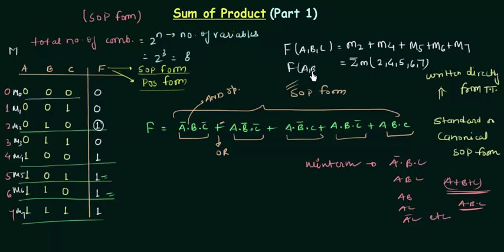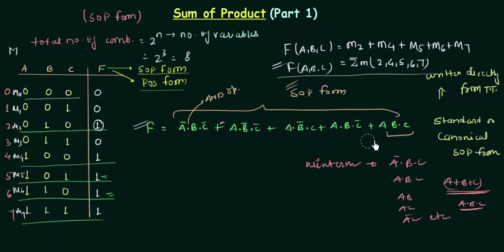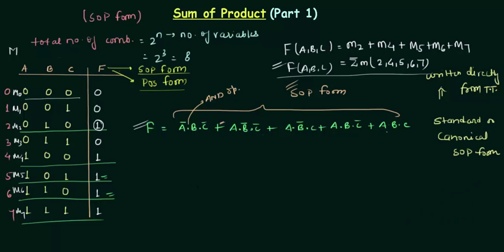In the exam the question will come like this and you have to find the SOP form and the minimal SOP form using this information. Let's move back to our canonical SOP form already evaluated from the truth table. We will now use Boolean algebra to find the reduced form, the minimal SOP form. You can also have all the information from this representation: m2, m4, m5, m6, and m7 are the min terms for which the function is high, so there is no need for the truth table. Now we will minimize it using Boolean algebra.